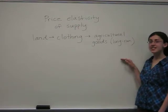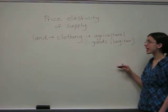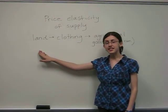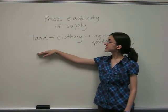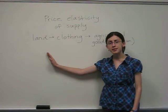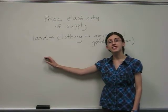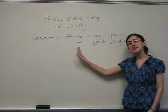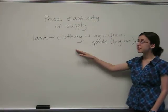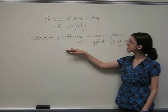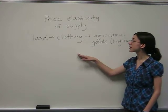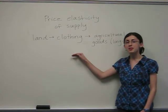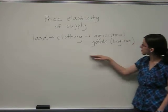Looking at price elasticity of supply, land is inelastic because there is no feasible way to produce more land. Clothing is, again, approximately unit elastic because firms will continue to produce more as price increases to the point where it's still profitable.